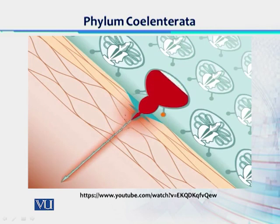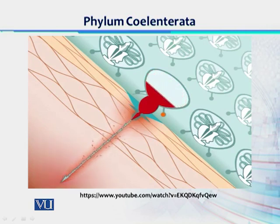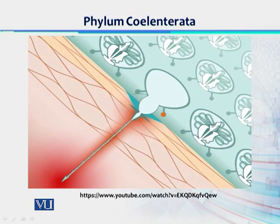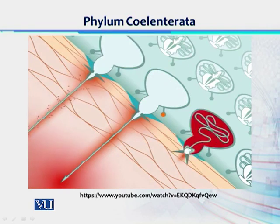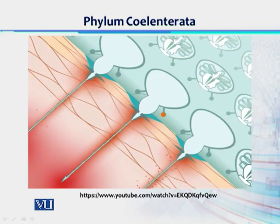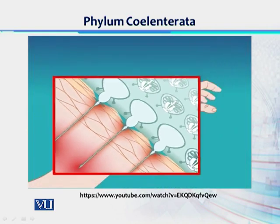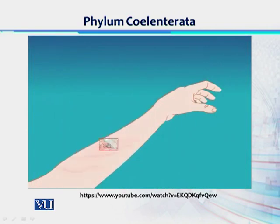The toxic dart then spreads the poison throughout the skin, much like a multi-headed poisonous arrow. Now imagine this process happening with millions of stinging cells. The result, as you might guess, is inflammation and a great deal of pain.